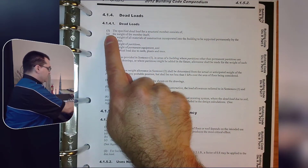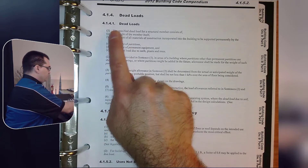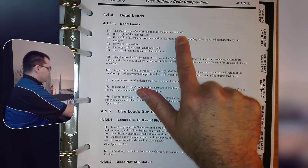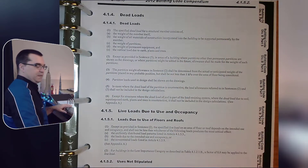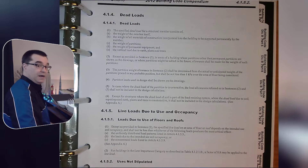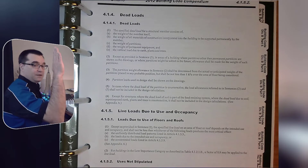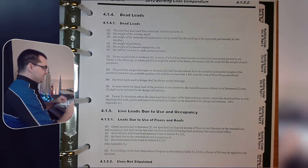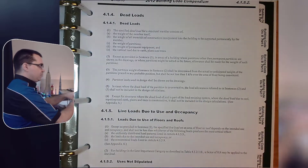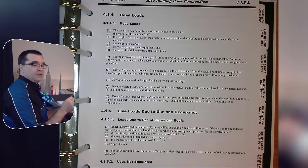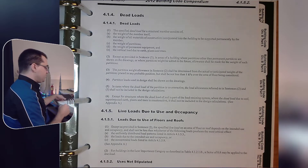Looking here under 4.1.4.1, the specified dead load for a structural member consists of various items. Notice how the words 'dead load' are italicized — they're not vertical, they're written at an angle. What does that mean? It means the Ontario Building Code has actually defined what it means by those words.